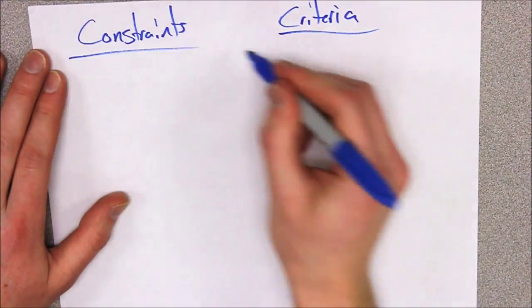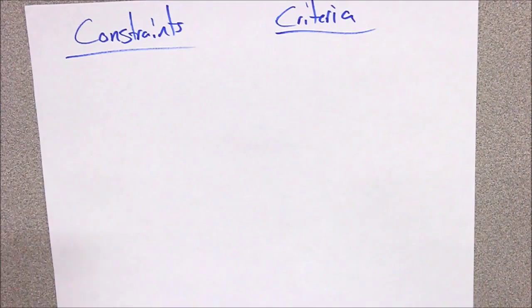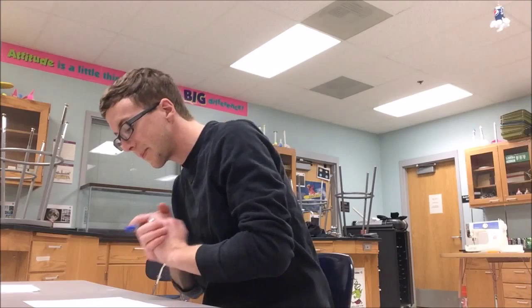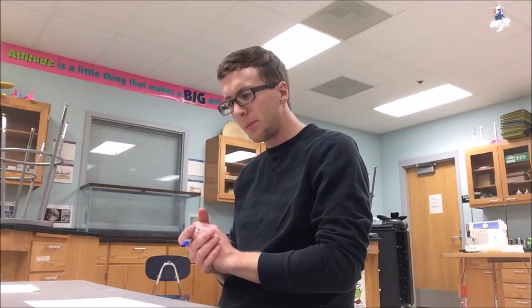Let's actually talk about criteria first. The criteria are the things that we need to have in the building process in order for it to work. For example, the length of the bridge is a criteria — it has to meet that criteria.